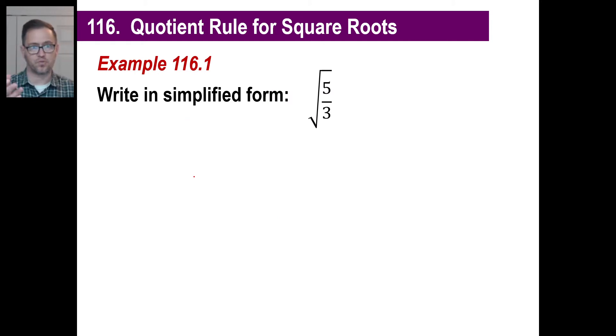So they will give you problems like this. Write this in simplified form. Well, if you have the square root of 5 over 3, that is, by definition, the same thing as the square root of 5 over the square root of 3. But we have a square root that doesn't have an integer answer as a denominator. We don't want that. We want it to be a rational number.